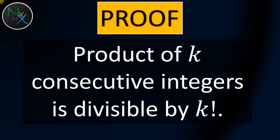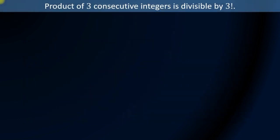Product of k consecutive integers is divisible by k factorial, where k is a natural number. Let us get some feel for what the theorem is all about.